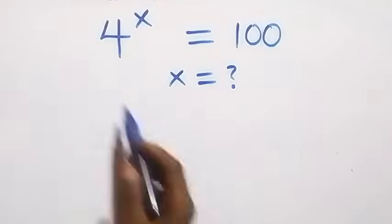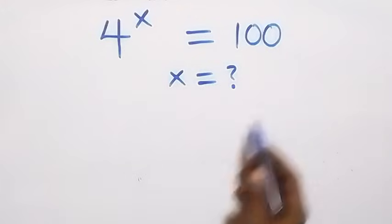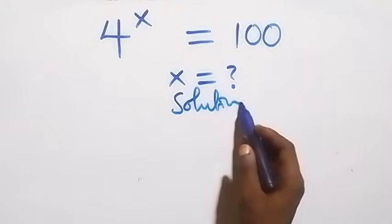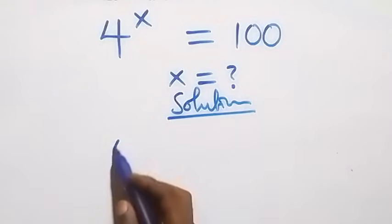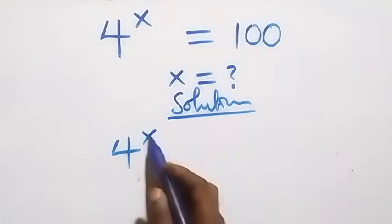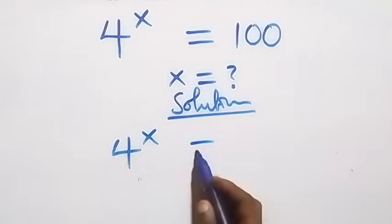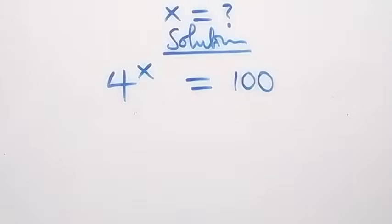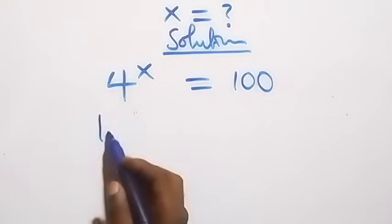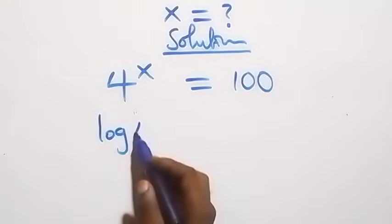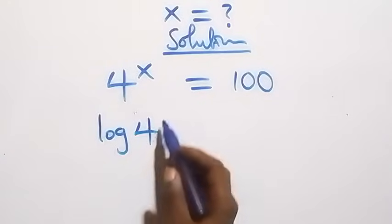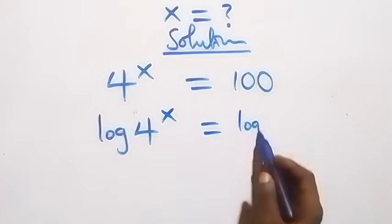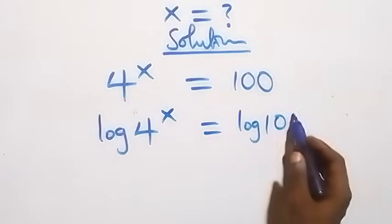Hello, you're welcome. How to solve this nice exponential equation. From what we are given here, which is 4 to the power x equals 100, we take the log on both sides, giving us log 4 to the power x equals log 100.